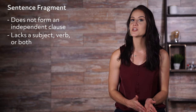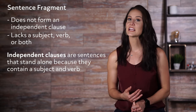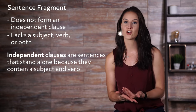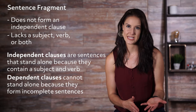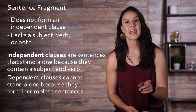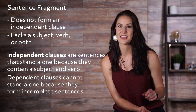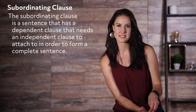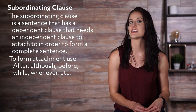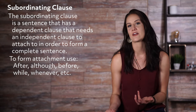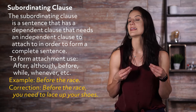Today we're going to look at six different types of sentence fragments. The first type is the subordinating clause — a sentence that has a dependent clause needing an independent clause to attach to it. A subordinating conjunction such as after, although, before, while, or whenever must be used. Example fragment: Before the race. A correction might look like: Before the race, you need to lace up your shoes. The second type is the participle phrase, which lacks both a subject and a verb and must modify a noun paired with an independent clause. Example fragment: Preparing for the race. Corrected: You ran five miles each day, preparing for the race.